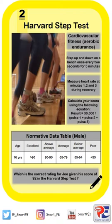Let's take a look at the normative data table below. I'd like you to read the scenario at the bottom of the page and link it to that normative data table to give Joe a rating for his Harvard STEP test score. As always, highlight any information you think is useful in the question and also in the data table itself. Press pause now and have a go to see if you can work it out.